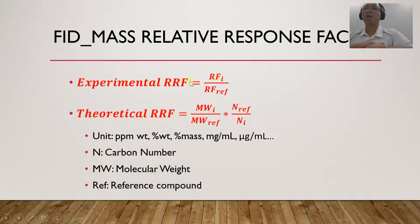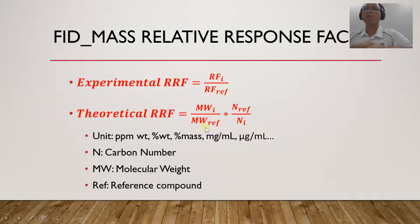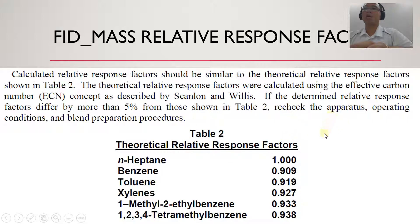I'll get into this formula in Excel a bit later. What I mean is: if you have a good instrument and a good standard, your experimental RF and theoretical RF should be more or less the same. Some methods specify what the allowable difference is. In this video I'm going to show you the method UOP744. It states that if the determined relative response factor — the experimental RF — differs by more than five percent from those shown in Table 2, which is the theoretical value, then that is not acceptable. So they allow up to five percent difference.